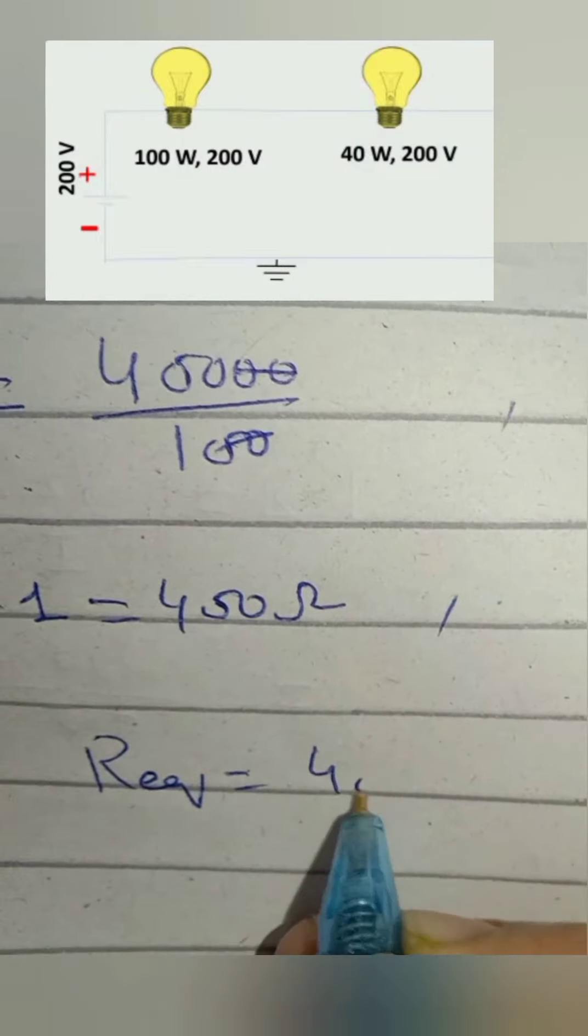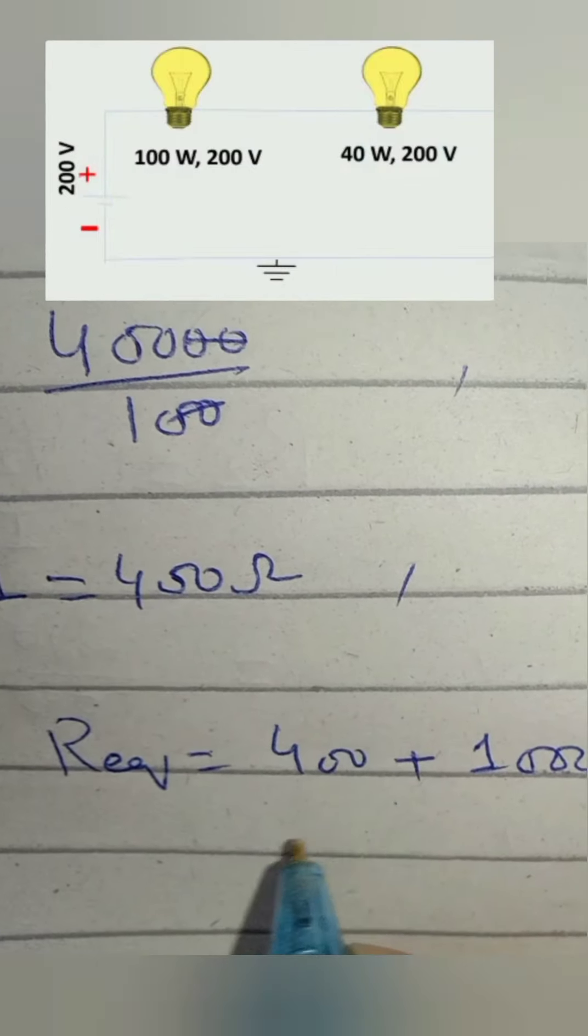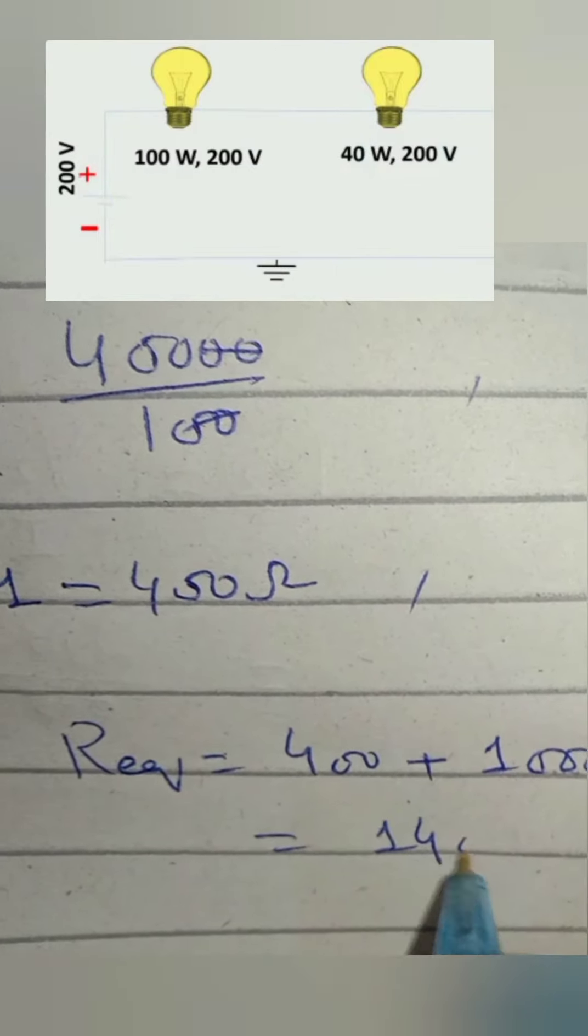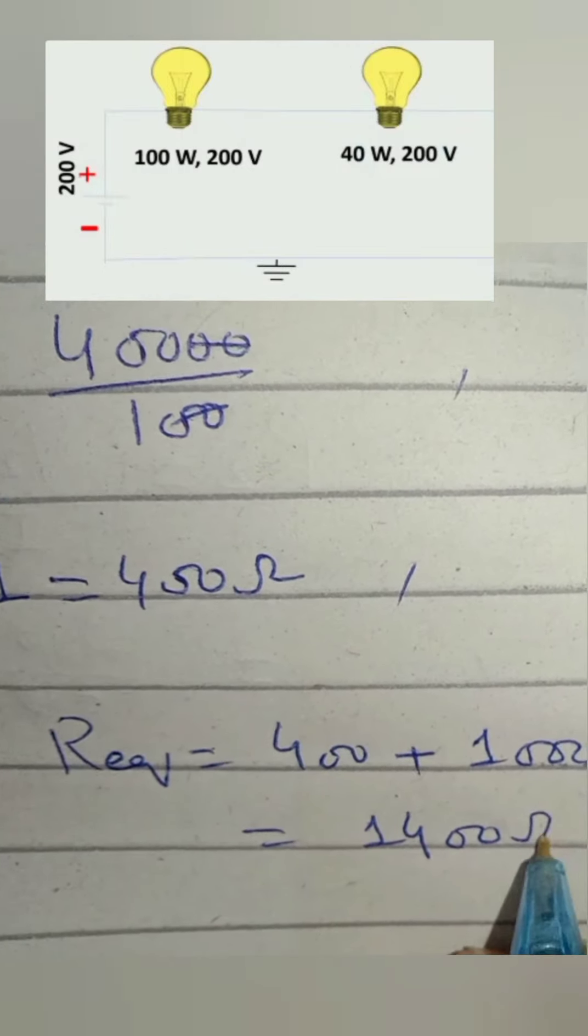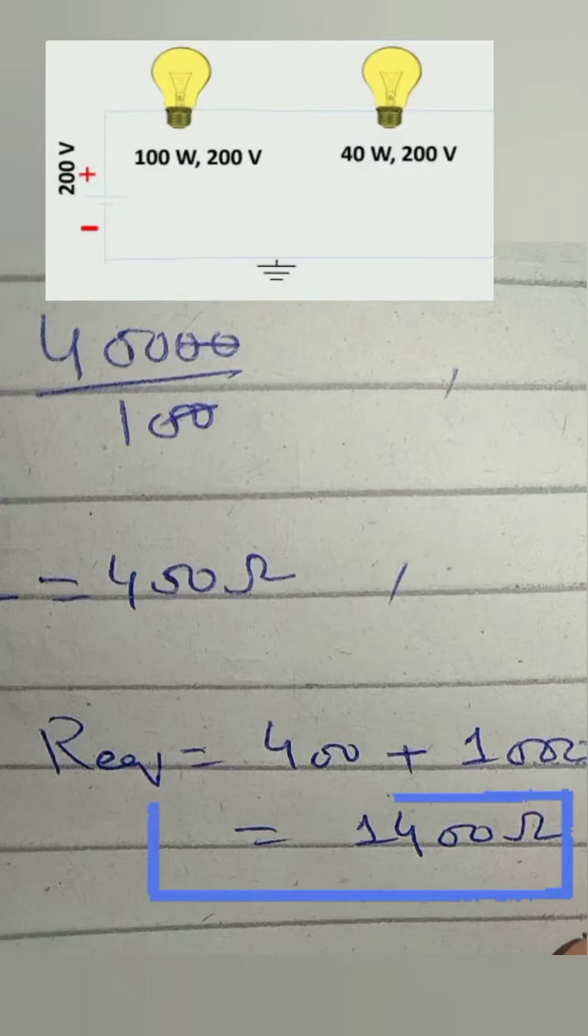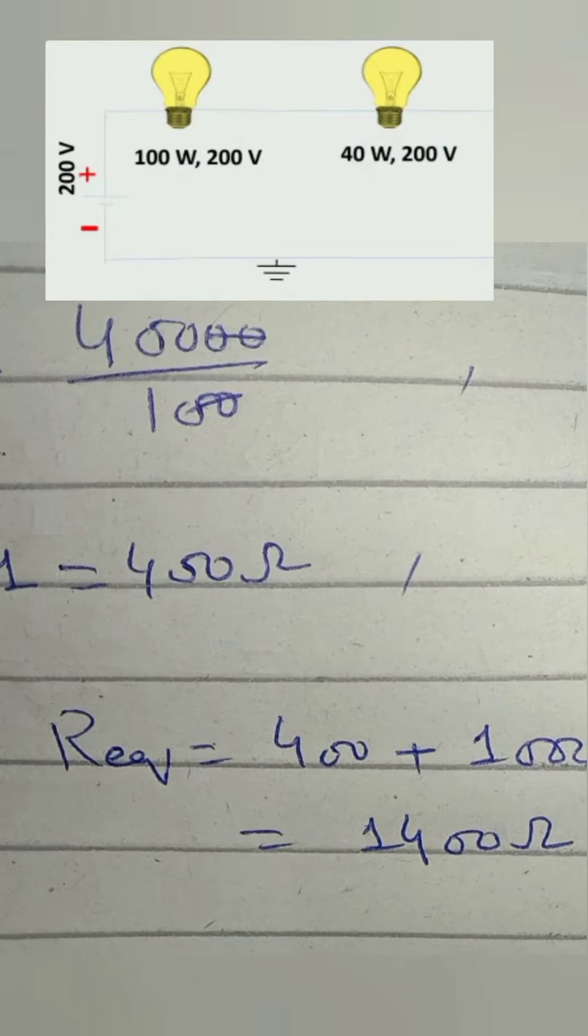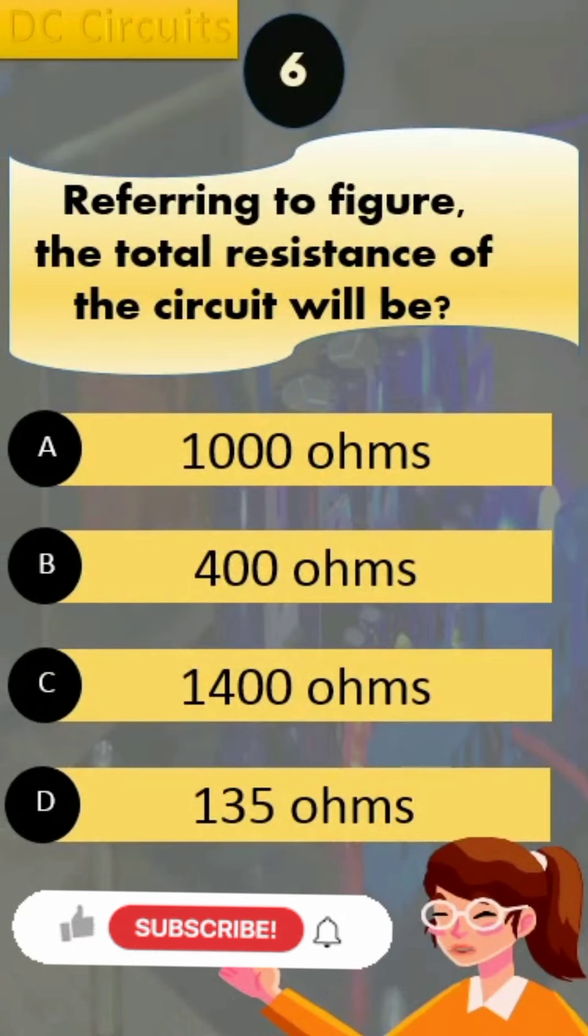As we discussed earlier, R equivalent is the numeric sum of R1 and R2. Just add both answers and we get 1400 ohms, which is the right answer. If we look at our options, we can see that option C is the correct answer, which is 1400 ohms.